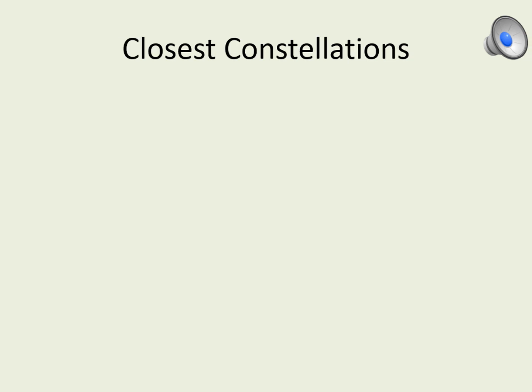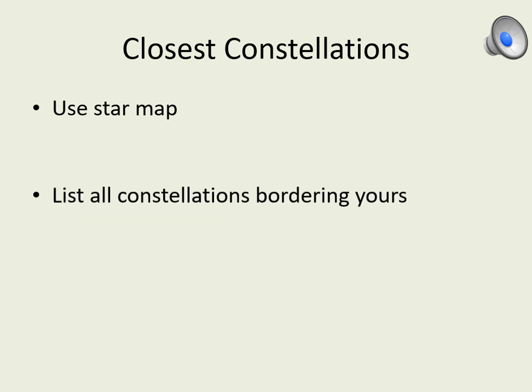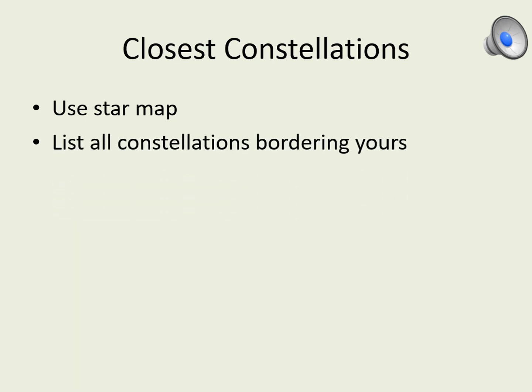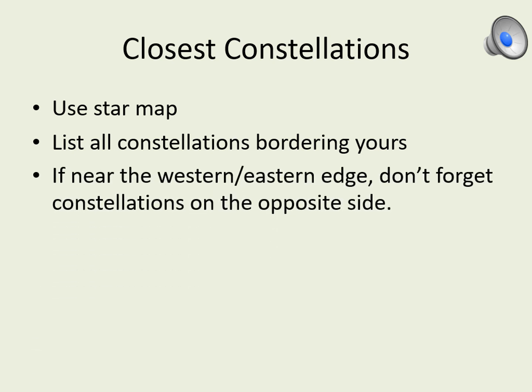For this question, you should review a map of the constellations to see which ones are closest to yours. If the map has the actual boundaries of the constellations, list all of the ones that share a boundary with yours. If the map just lists the patterns of stars, include the constellations that surround yours. Remember, if your constellation is near the eastern or western edge of the map, you should include constellations on the opposite edge.